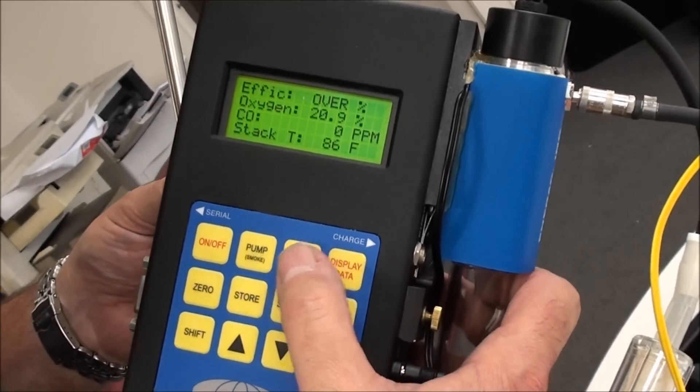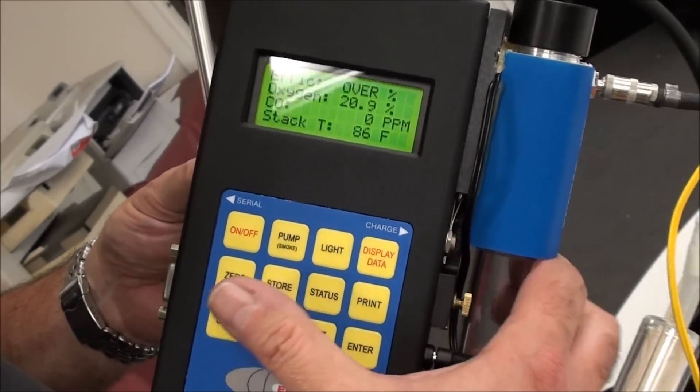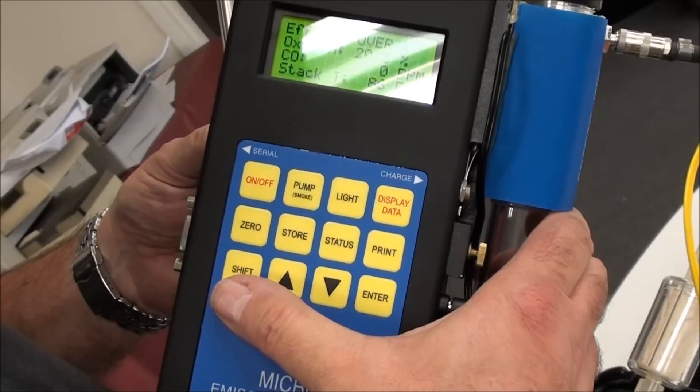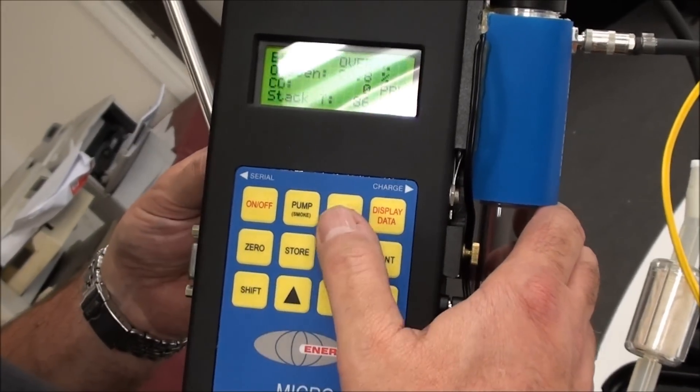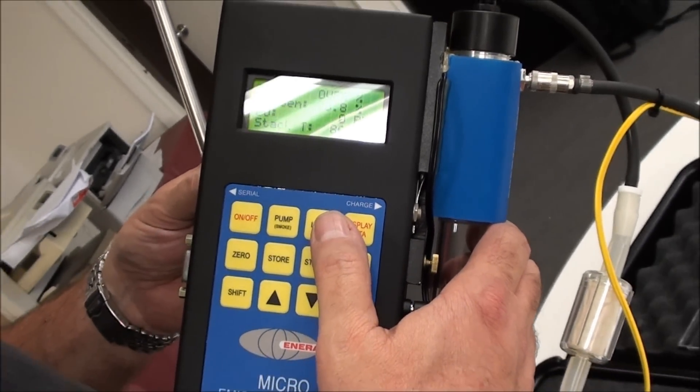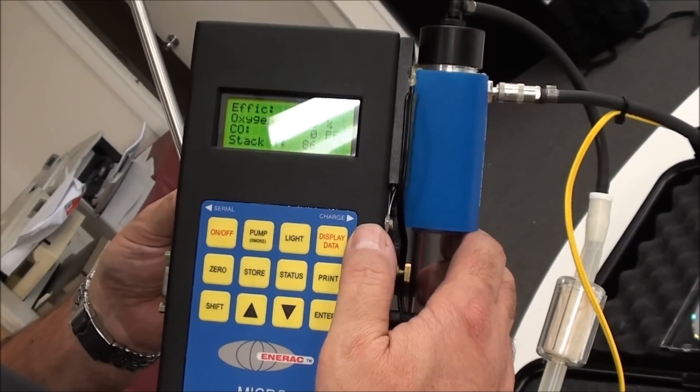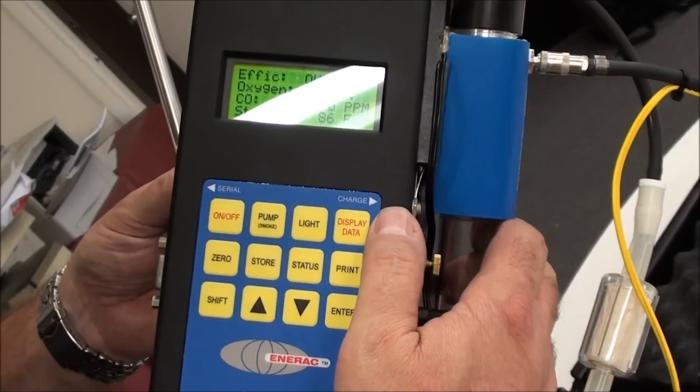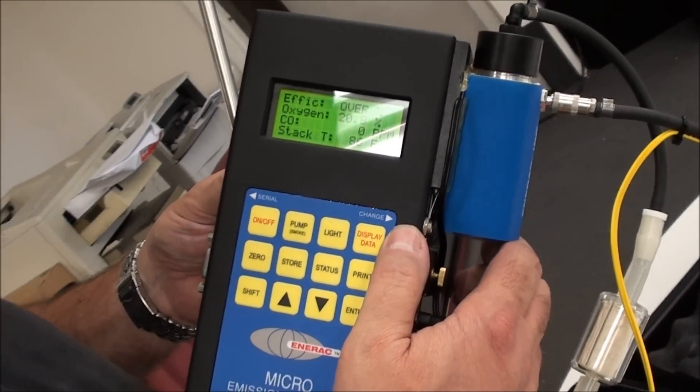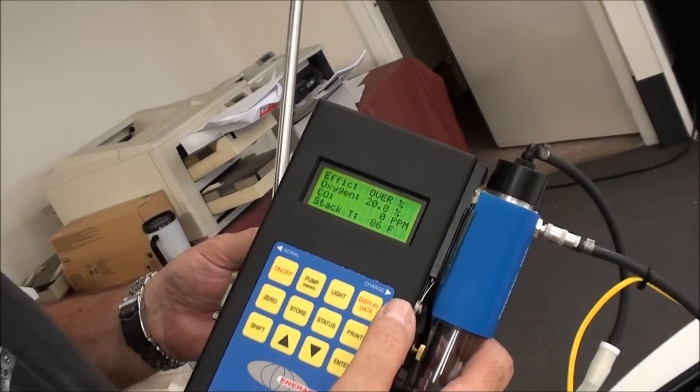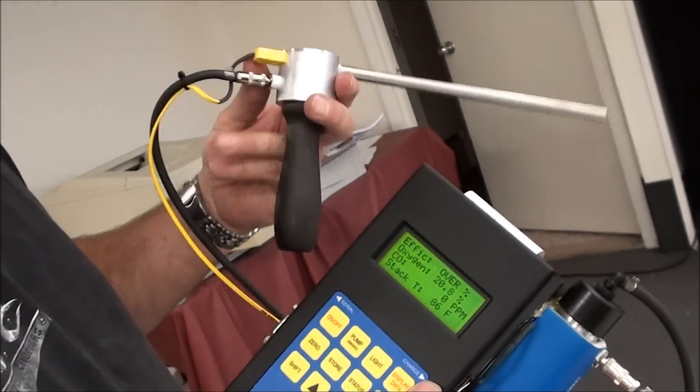Another option is you can set up a timed storage, which you can access through the menus. You could also review, if you want, in the menus. You can review the stored data and erase or print out hard copies from the stored data. So those are the several options that you've got.